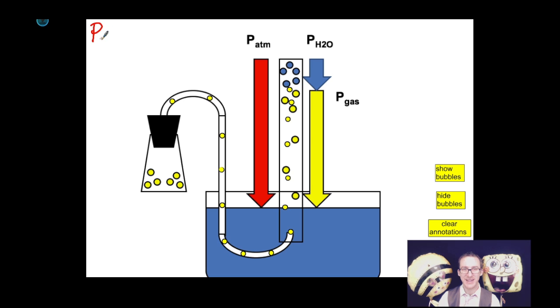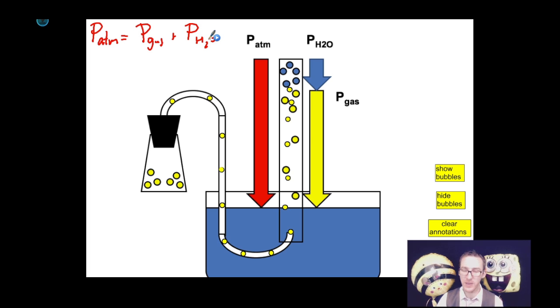So just keep in mind that the atmospheric pressure outside of your collection vessel can be used to help determine the partial pressure of the gas that you were collecting by using the reference list for the partial pressure of water vapor at different temperatures.